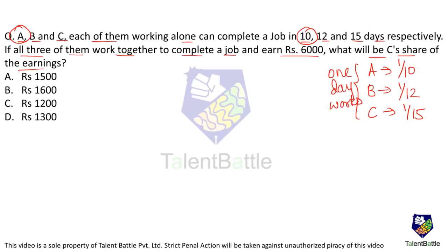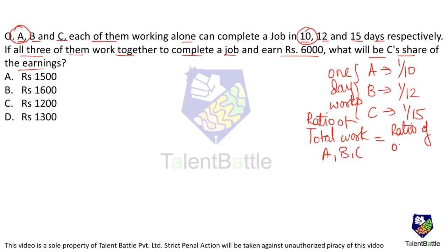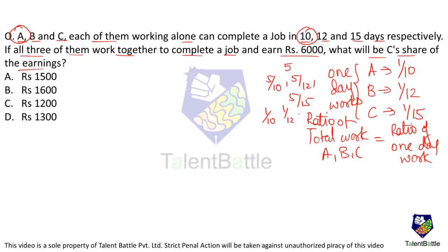The ratio of total work done by A, B, and C is always equal to the ratio of their one-day work: 1/10 : 1/12 : 1/15. This holds regardless of how many days they work together — for example, after 5 days, A does 5/10, B does 5/12, C does 5/15, and the ratio remains the same.